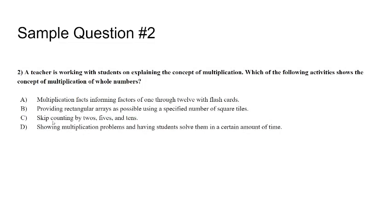I don't think C would be good. I'm going to say with multiplication facts and forming factors one through twelve, I'm going to cross that out. Providing rectangular arrays as possible using specified number, square of tiles. I'm going to have to go with D. I'm going to take a guess on that one.